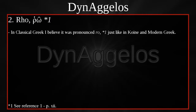RHO — in classical Greek I believe it was pronounced RO, just like in Koine and modern Greek. The interesting thing about this letter is when it begins a word, just like in the word RO, it always has a rough breather. In classical Greek, a rough breather meant that an H sound was supposed to be pronounced before the letter. I'm not exactly sure how you'd pronounce H before R, other than maybe HRO or something like that, so maybe that's a little bit closer to what it sounded like in classical Greek.